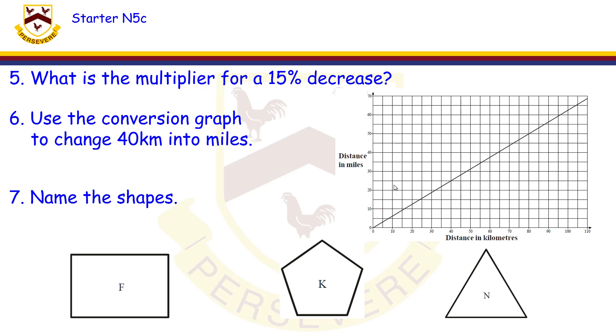Right, what is the multiplier for a 15 percent decrease? Decrease. So make sure we read that question and get out of it what it's trying to say to us. Decrease means it's going down in value, so we start from 100 percent and it goes down 15.